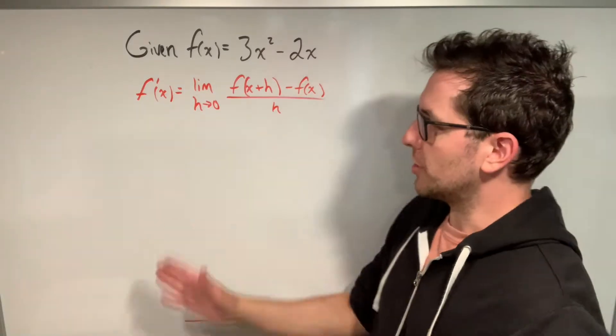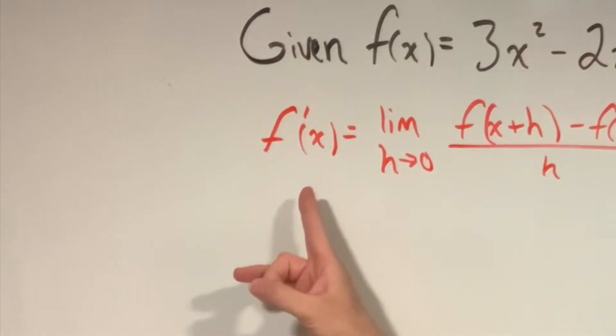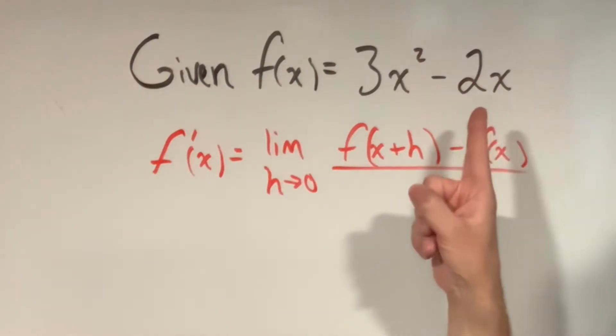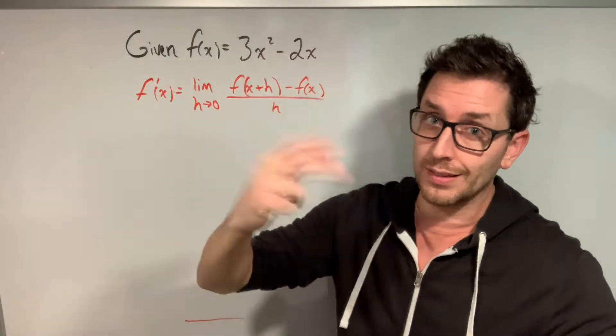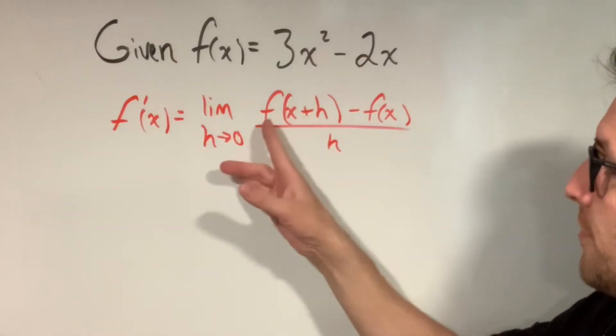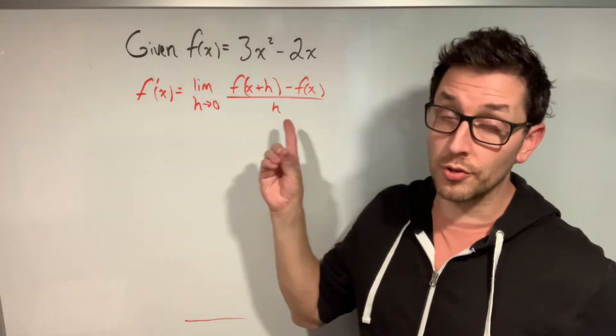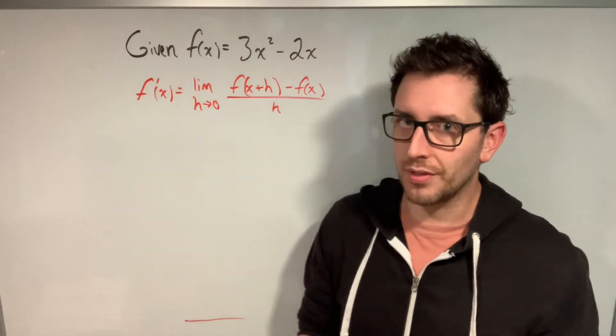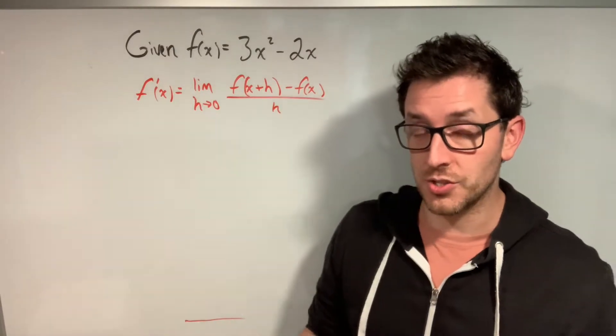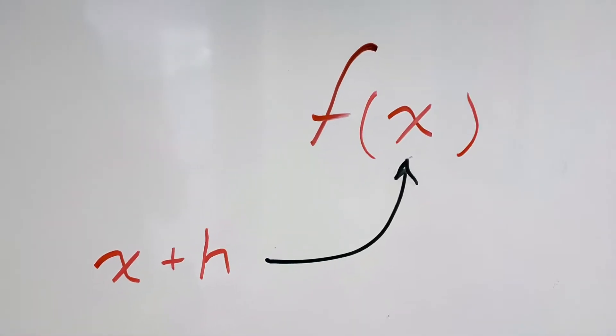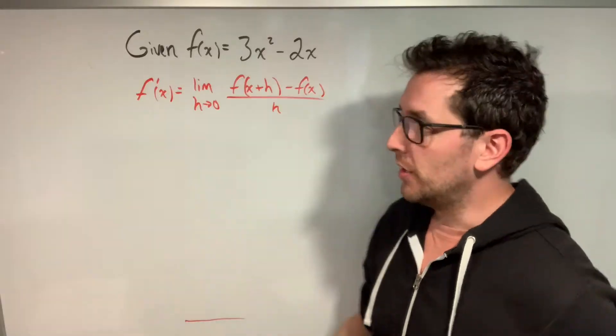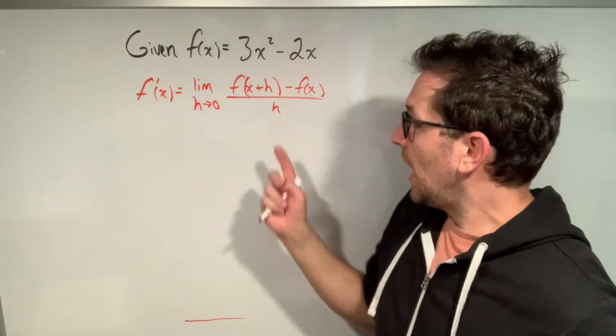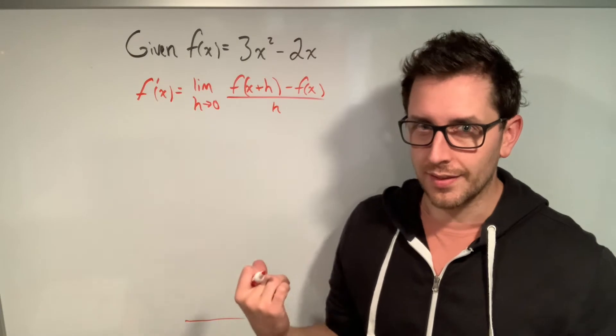So the first thing you really need to know about the first principle's definition is what each piece means. The first part here, f'(x), just means the derivative of the function f, which in this case is given up here. We're not going to worry about the limit as h goes to zero quite yet, because we're going to get to that later on in our derivative. But this next part, f(x+h) is super important. And this is also where many people make a lot of mistakes. This is not f times x plus h, or any other creative sort of thing you can come up with. This is f at x plus h, which means you're going to take x plus h, and you're sticking inside f wherever there's an x. And you'll see that once we get started. We're then going to subtract the function f(x), which is just the function that we're given. So nothing fancy there. And then of course, we're dividing everything by h. But again, that's not really important right now. We're going to get to that later on.